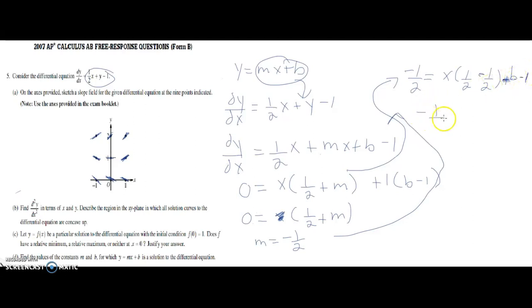So now we have negative one-half, because this part's going to zero out, equals b minus one. So b has to equal a half. So we have b equals a half, m equals negative one-half.